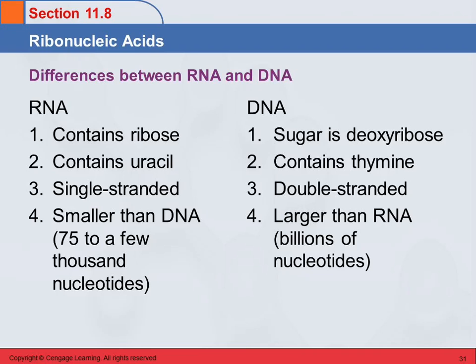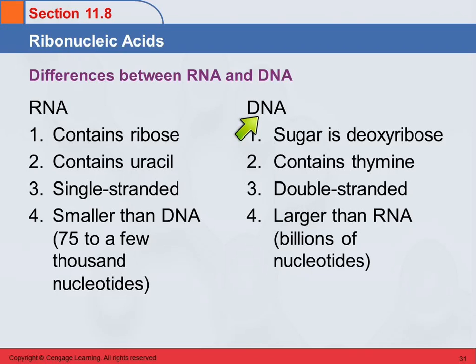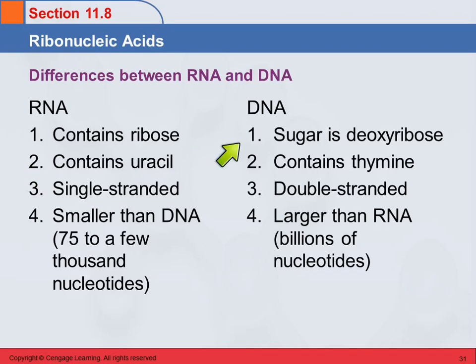So let's review the differences between RNA and DNA. RNA stands for ribonucleic acid. RNA contains ribose. DNA stands for deoxyribonucleic acid, so the sugar in it is deoxyribose. There's also a difference in the bases. RNA contains the base uracil, while DNA contains the base thymine.